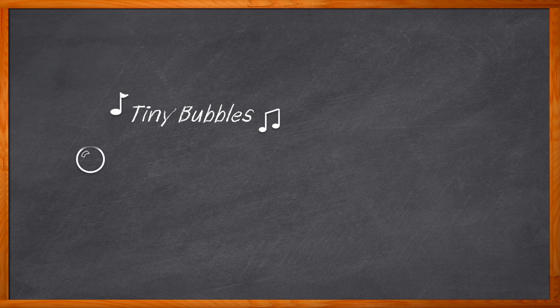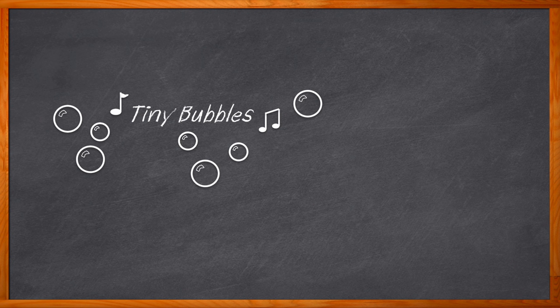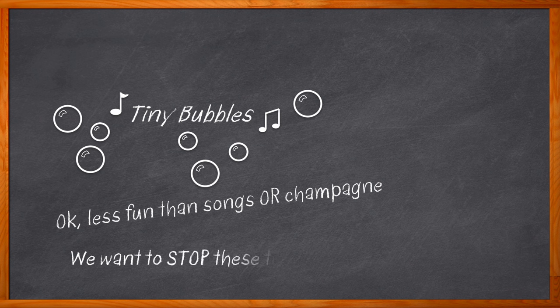This chalk talk is about tiny bubbles — not just any kind of tiny bubbles, but tiny bubbles that can cause a bunch of problems. I'm talking about outgassing: when tiny bubbles escape from organic materials when pressure changes. Specifically, I'm talking about outgassing in space applications and what you can do to stop these tiny bubbles from wreaking all sorts of havoc in your next space application.